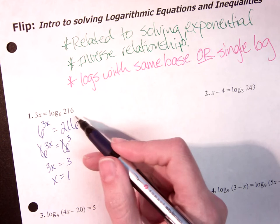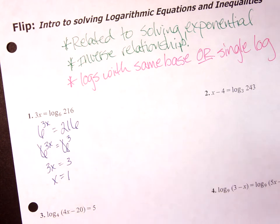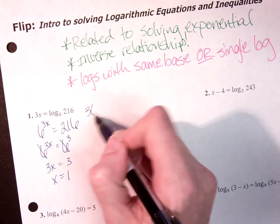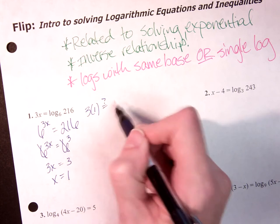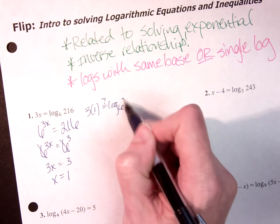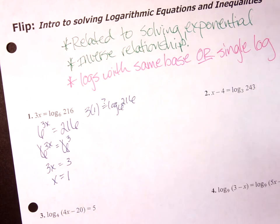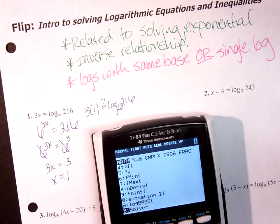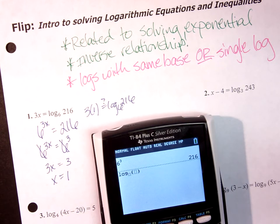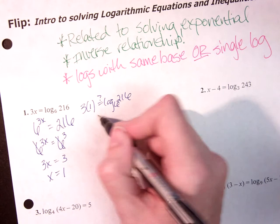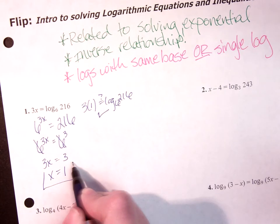So again, just like before, we want to go back and check it. Is 3 times 1 equal to log base 6 of 216? So math, go get log base 6, 216, it is equal, we know we're right. I'm going to keep my answer.